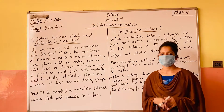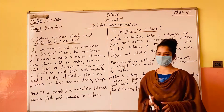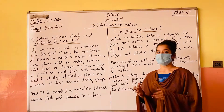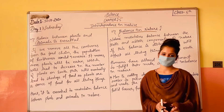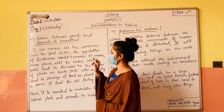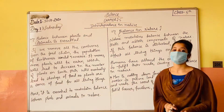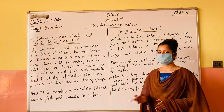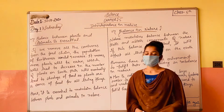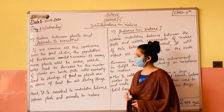Last class mein hum plants aur animals ki kaafi cheezein padh chuke hain — ki plants animals par kaise depend hain aur animals plants par kaise depend hain. Aaj hum padhenge: balance between plants and animals is essential — means ki plants aur animals ke beech mein balance banana bahut zaroori hai. Kyun? Dekhte hain.